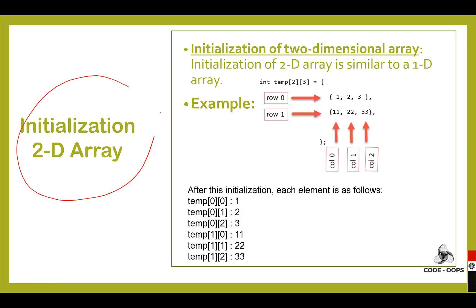Next is the initialization of a 2D array. Initialization of a 2D array is similar to a 1D array. For example: int is the data type, temp is the name of the array, the first subscript is the row size and 3 is the column size. The elements are 1, 2, 3, 11, 22, and 33. Here 1, 2, 3 are the elements of the first row, and 11, 22, 33 are the elements of the second row.